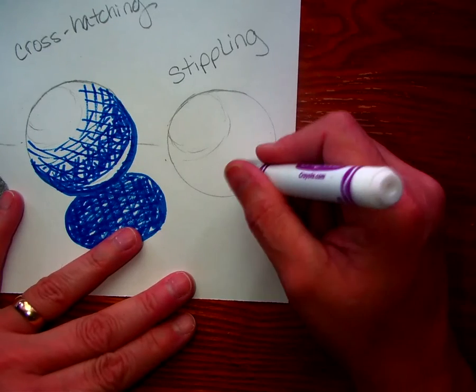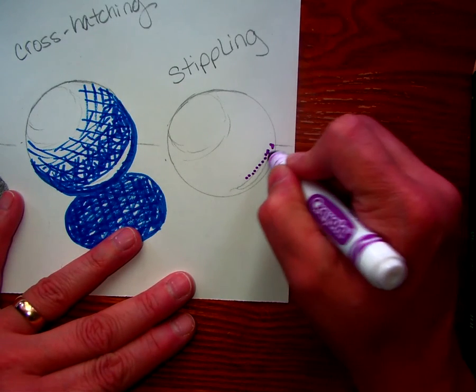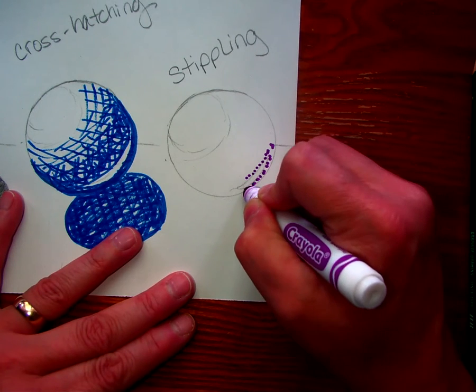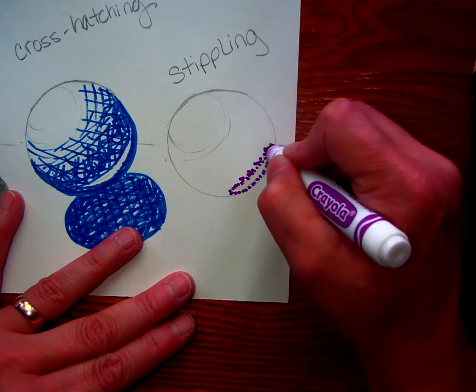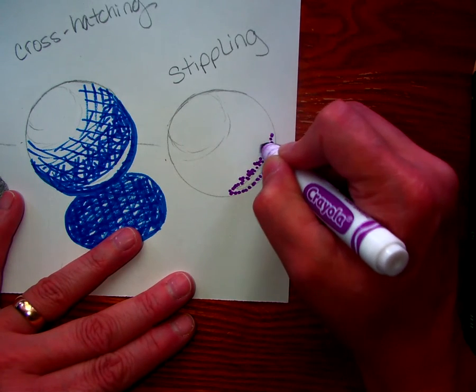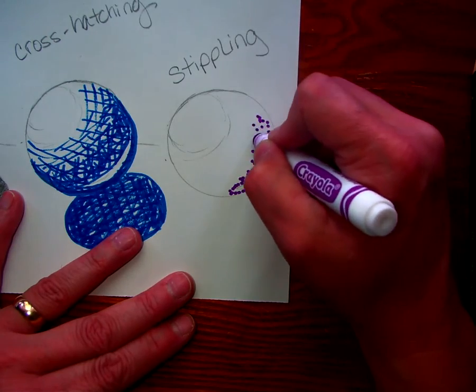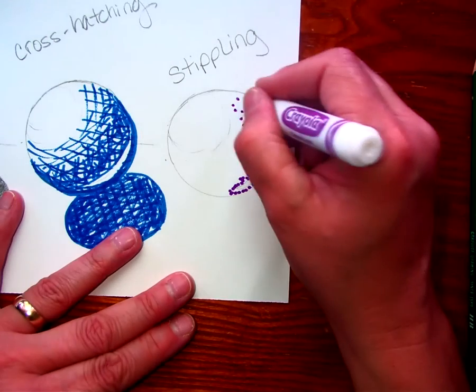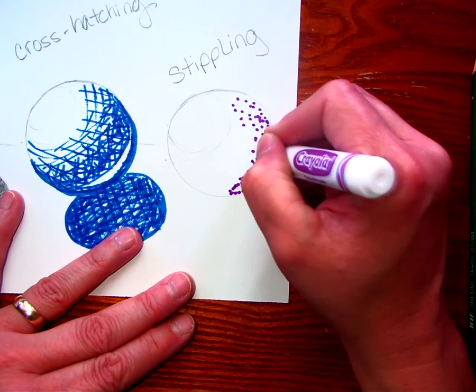And I can go ahead and start on doing the dots along here. And having them come together and spread out as I want a lighter value. So as I want a lighter value, I can put them farther apart. And then when I want a darker value, I can start to fill them in more.